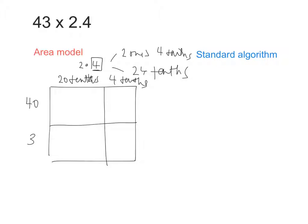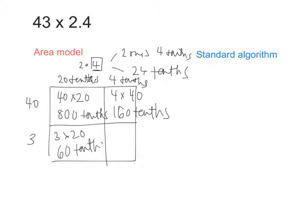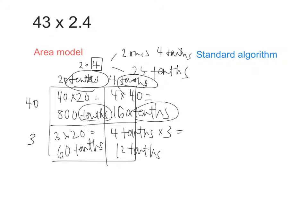Now I'm ready to multiply. I can do 40 times 20, which is 800. But is it 800 ones or is it 800 tenths? 800 tenths. Now over here I have 4 times, or 4 tenths times 40, which is 160, but is it ones or tenths? Tenths. Over here I have 3 times 20 tenths, so that's 60 tenths. And then over here I have 4 tenths times 3, which is what? 12 tenths. Do you guys see how because my factors up here are tenths, all of my products are also tenths?